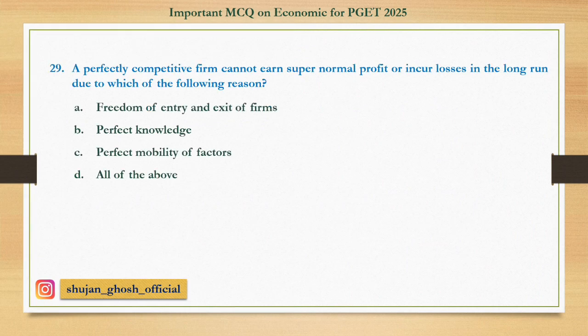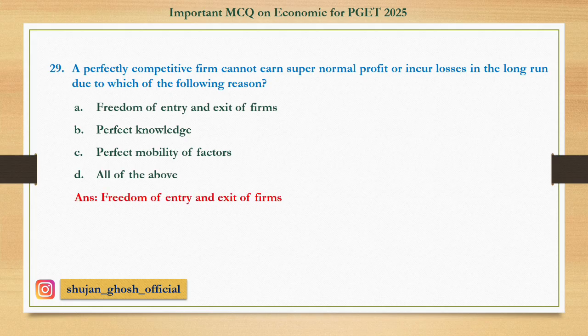Question number twenty-nine: A perfectly competitive firm cannot earn supernormal profit or incur losses in the long run due to which reason? Option A: freedom of entry and exit of firms; B: perfect knowledge; C: perfect mobility of factors; D: all of the above. Answer: freedom of entry and exit of firms.